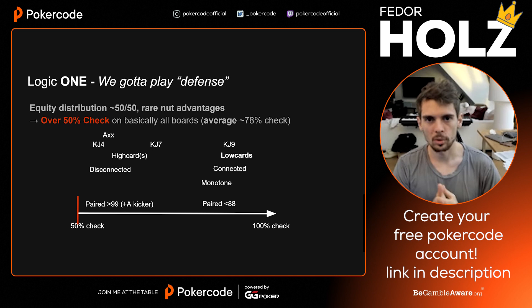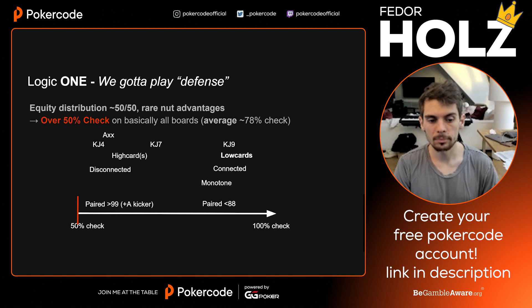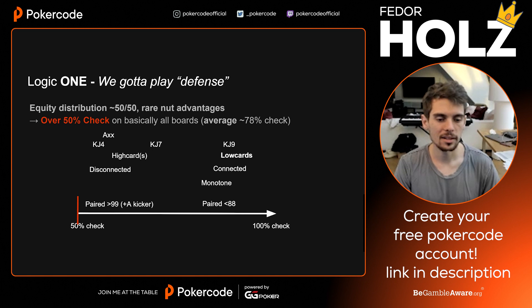The second correlation is disconnected versus connected. Generally the more disconnected boards get bet more often and the connected ones get checked more often, because we don't really have that much incentive to bet on connected boards — we don't fold out that much with the minbet, the b33. One other big thing in terms of checking is monotone boards: those we also check, because big blind has a lot of continues and we have to play more passive on those.